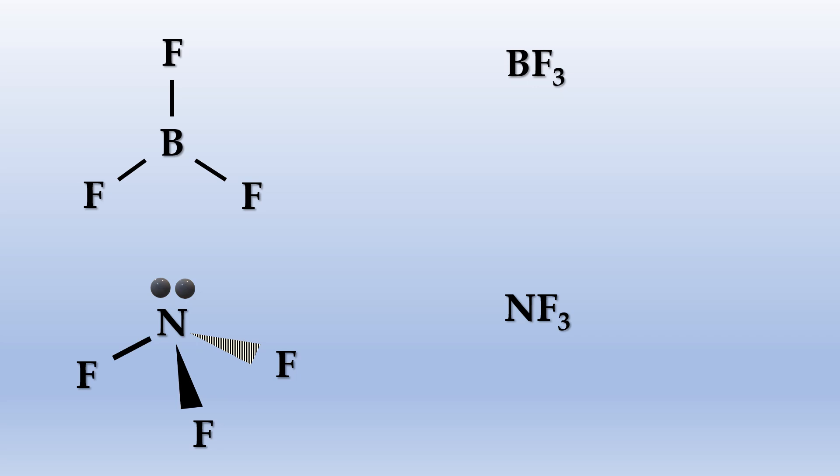Let's consider the examples of boron trifluoride and nitrogen trifluoride. They have similar formulas, but BF3 is a trigonal planar shape. You can think of it as flat on your screen.